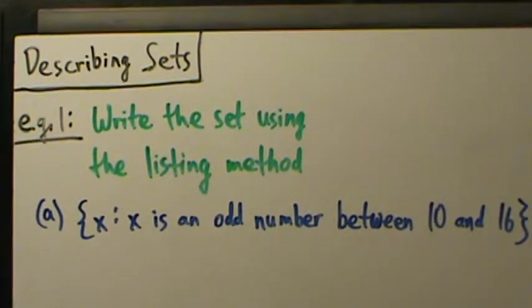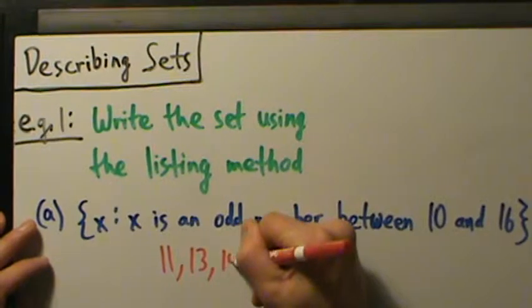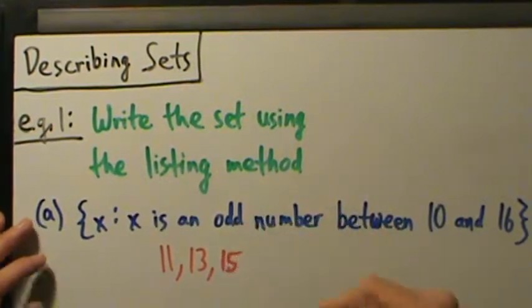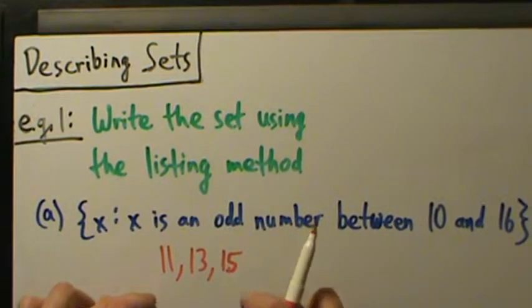So what are all the numbers? 10, 11, 12, 13, 14, 15, 16, right? So if we just think about the odd numbers, what are they? They're 11, 13, and 15, right? What's the next odd number? 17, but 17 is too big. It's not between 10 and 16. What about the other way? 11, the next odd number lower than that is 9, but 9 is too small. It's not between 10 and 16. Okay, so this is it.